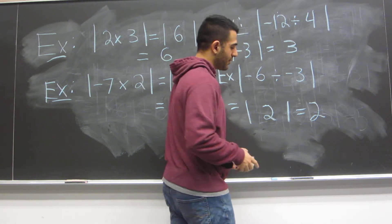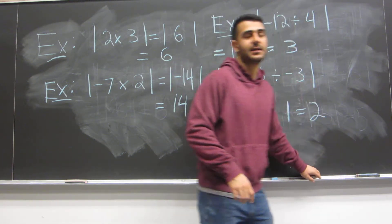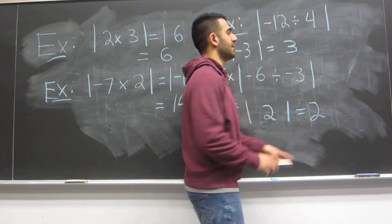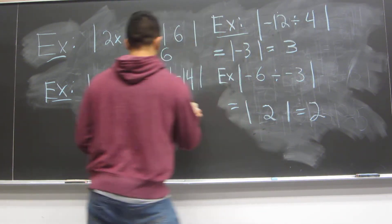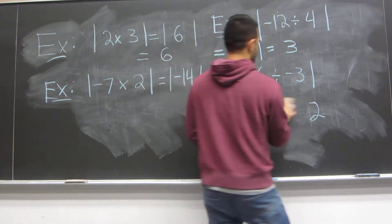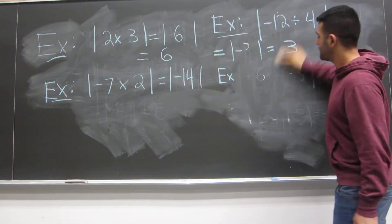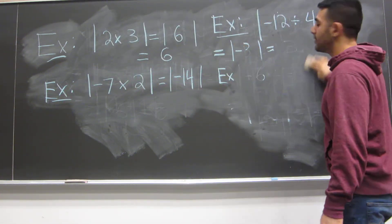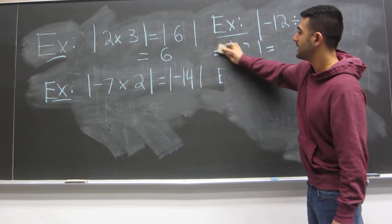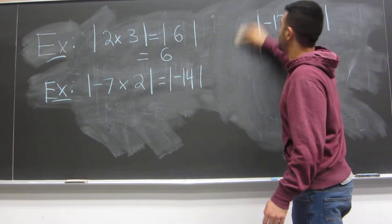Let's do one example where we have both division and multiplication inside the absolute value. You're just doing what you already know, and then once you're done, you take the absolute value.